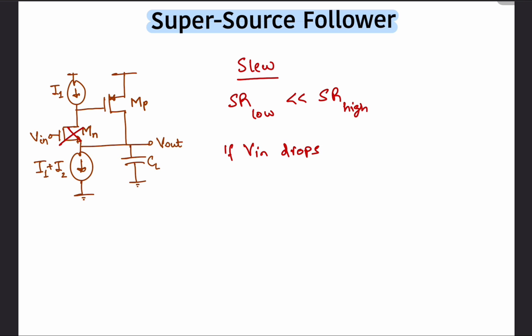Suppose Vn drops instantly, then Mn turns off and I1 charges the gate voltage of Mp, turning it off as well. Therefore, the slew rate is limited by the current I1 plus I2.